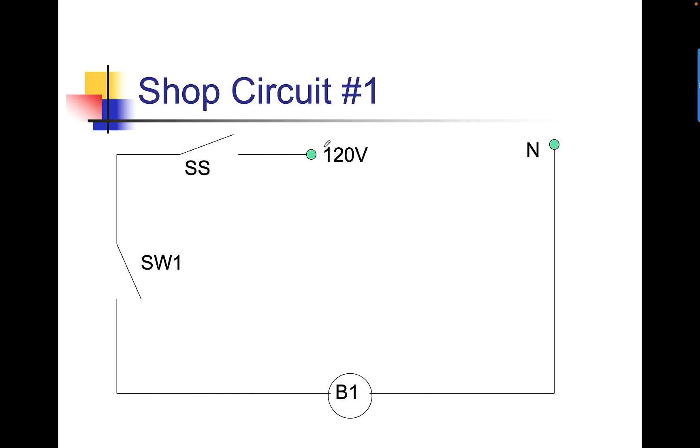But basically, this is your shop circuit number one. We have our neutral. We have a 120-volt line. We have a service switch, a switch, and a bulb one. Basically, it's a light bulb circuit. It's a lamp. Service switch is the equivalent of a breaker. Switch on the light, your light bulb, and back to neutral.